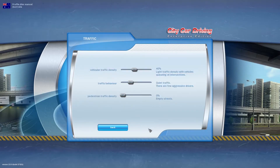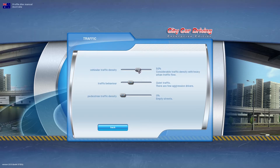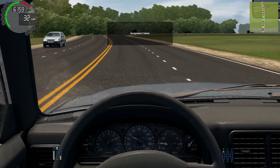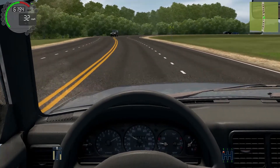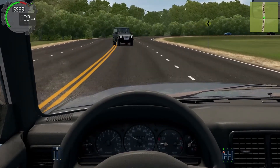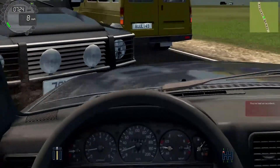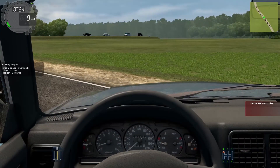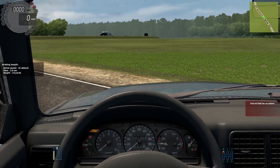The software allows the instructor to adjust how many vehicles and pedestrians are in the virtual world. For someone starting to learn to drive, traffic volumes can be lowered, and after more experience is gained, traffic can be increased. The behaviour of traffic can also be altered to be more fast-paced or even aggressive. As this video demonstrates, the simulator software has many diverse capabilities — it just requires dedicated instructors to learn how to use the software to its full potential.